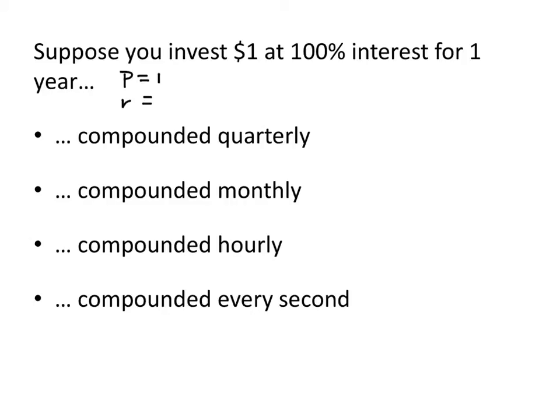Our r is 100%, which when we express that as a decimal, is going to be 1. Our t is going to be 1, because we're investing for one year.